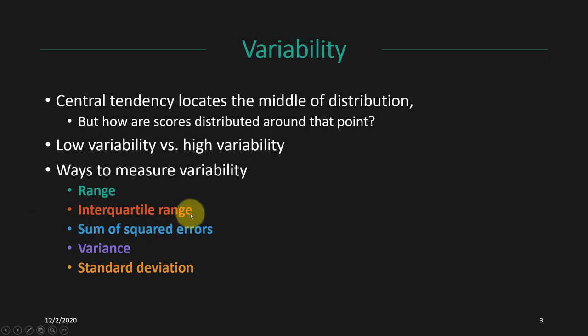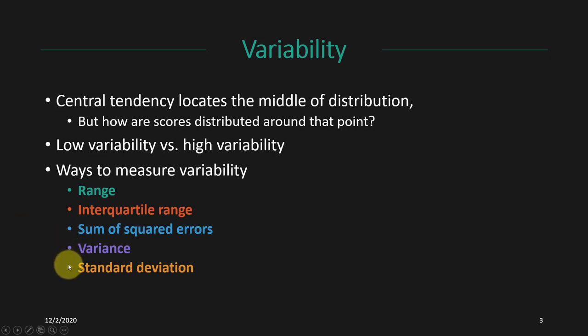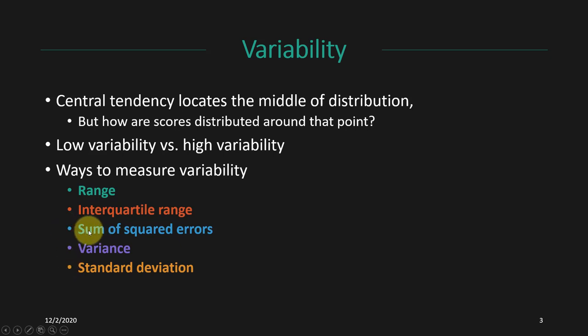Going another level deeper, we could calculate the interquartile range, which separates the lower 25th percentile from the upper 75th percentile to tell us about the middle 50% of the data. And then we have the sum of squared errors, the variance, and the standard deviation. All three of these measures are related — after calculating the sum of squared errors, it's easy to calculate the variance, and after calculating the variance, it's easy to calculate the standard deviation.